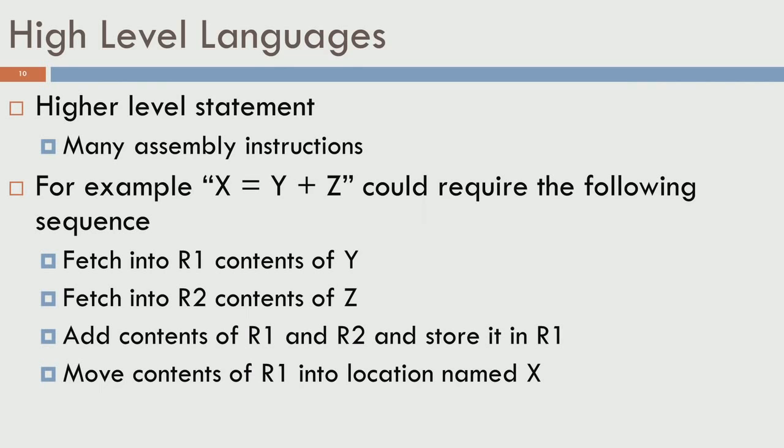I would write this as x equals y plus z, and it could require the following sequence of operations: fetch y from memory, store it in a register called R1, fetch z from memory, store it in another register R2, and the ALU would then add R1 and R2, store the result back in R1 itself. It may require a move from R1 to the memory location named x.